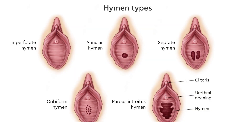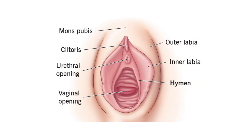Next, we will look at the hymen. The hymen is a thin membrane that sometimes partially covers the entrance to the vagina. The vaginal opening is located between the opening of the urethra and the anus, and it is flanked by outlets to the Bartholin's glands.